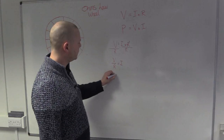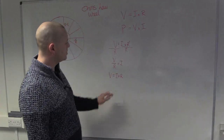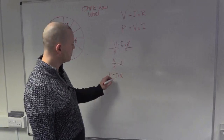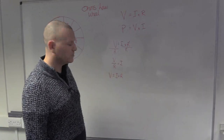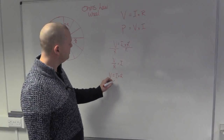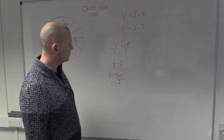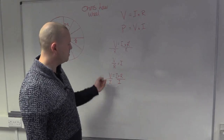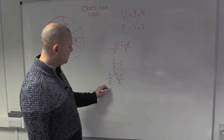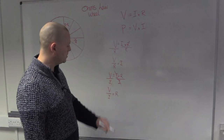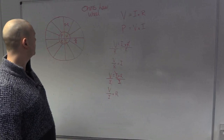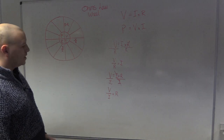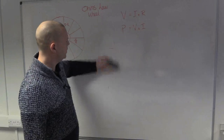Going back to the original equation, let's now transpose for R. Same process — this time I isolate resistance by removing current. I divide both sides by I, the current cancels, and we end up with our third equation: resistance equals voltage divided by current, R = V/I. We can put this in now — voltage divided by current gives us resistance.